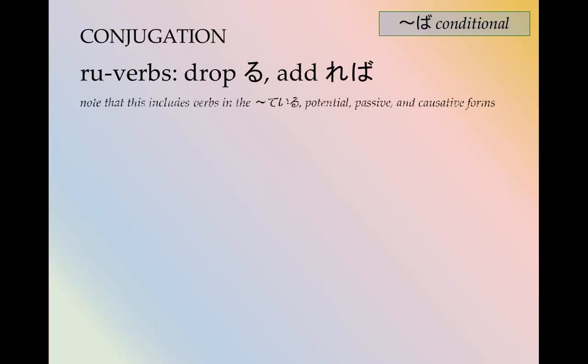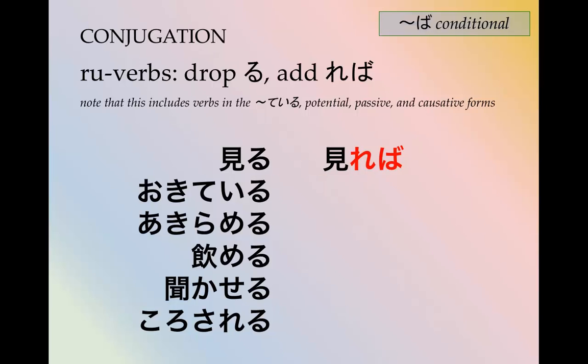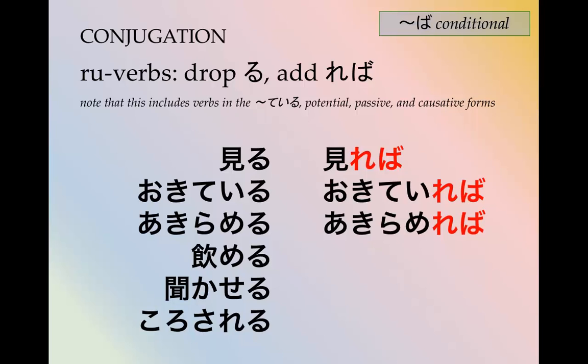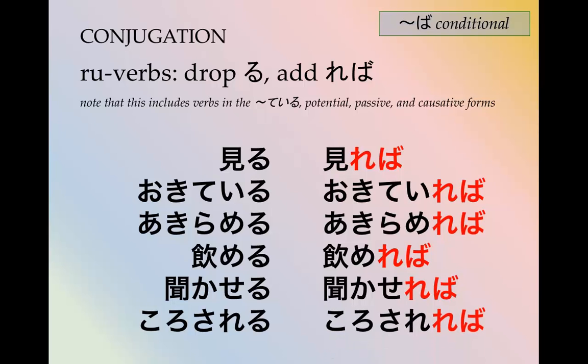How do we form the ば form? For る verbs, you drop the る and add れば. This includes っている forms. Note that you can conjugate verbs in the passive, causative, and potential forms — it doesn't matter what form the verb is, you can conjugate it in the ば form.